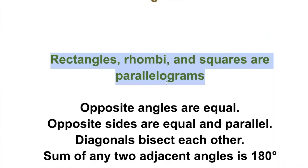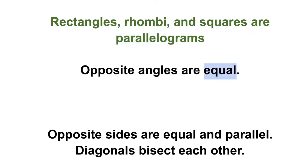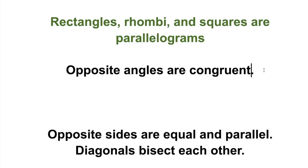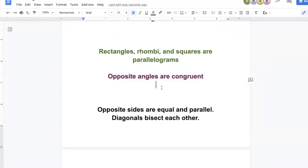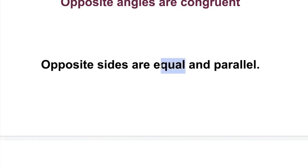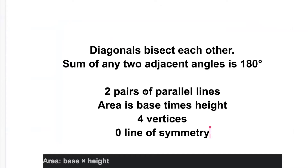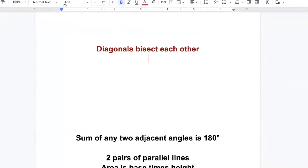Who knows why we call it a parallelogram? What is the meaning of parallel? They have the same direction. Opposite angles are equal — who wrote this? Amazing. Now change 'equal' to 'congruent' because in geometry we don't say 'the same' — that's algebra. In geometry we say 'congruent.' Opposite sides are parallel and congruent — good job. Diagonals bisect each other — wow, who wrote this?